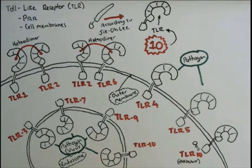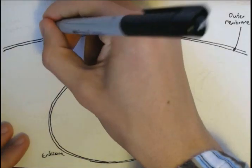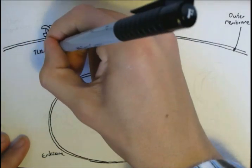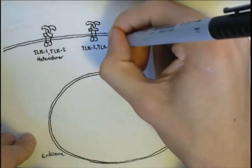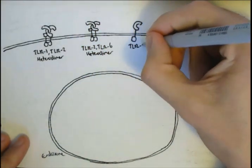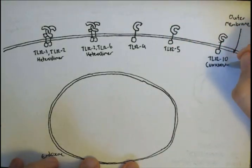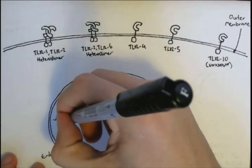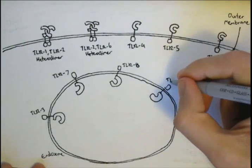So let's have a look at what these different receptors bind to. Here is the cell's outer membrane again, and within the cell is an endosome. Heterodimers TLR1 and 2, and TLR2 and 6 are found on the outer membrane, as well as TLR4 and TLR5, and also TLR10, whose activation is unknown. TLRs 3, 7, 8, and 9 are found on endosomal membranes, as mentioned before. So what binds to these different receptors, that is the question.